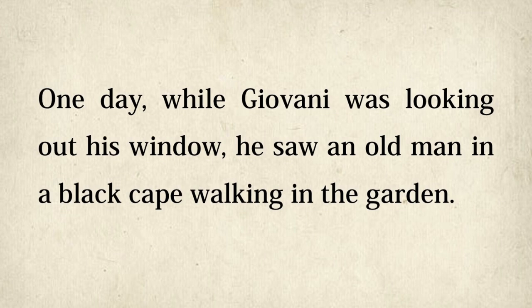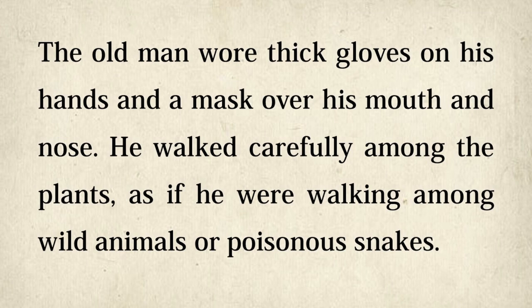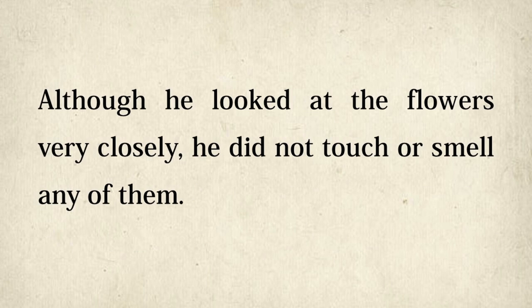One day, while Giovanni was looking out his window, he saw an old man in a black cape walking in the garden. The old man was tall and thin. His face was an unhealthy yellow color. His black eyes were very cold. The old man wore thick gloves on his hands and a mask over his mouth and nose. He walked carefully among the plants, as if he were walking among wild animals or poisonous snakes. Although he looked at the flowers very closely, he did not touch or smell any of them.